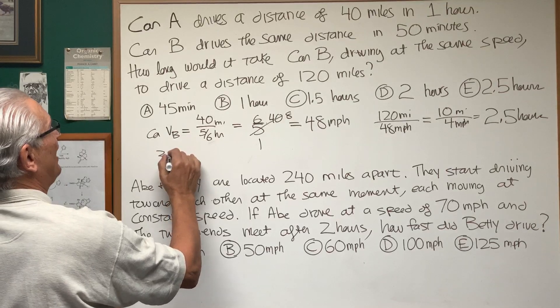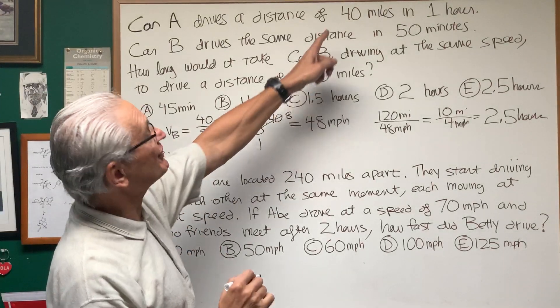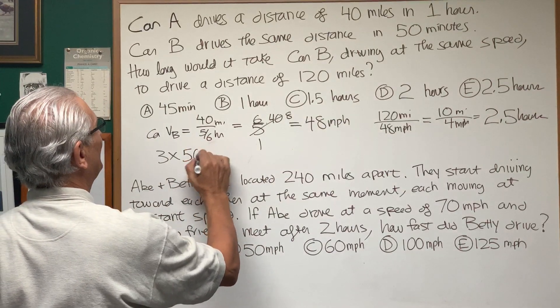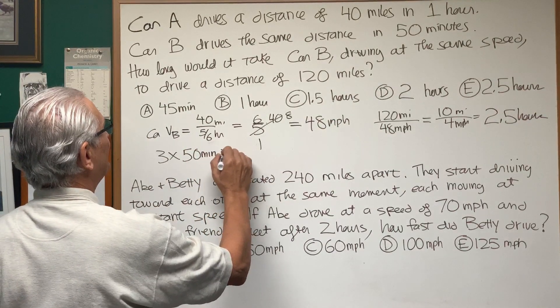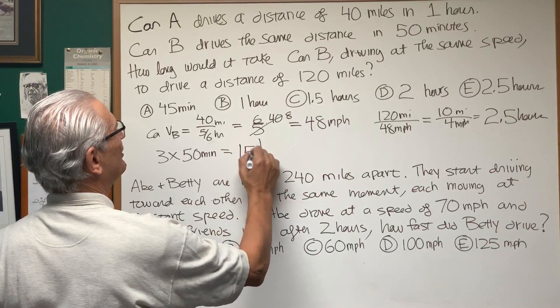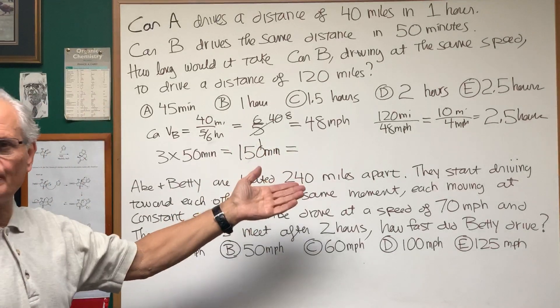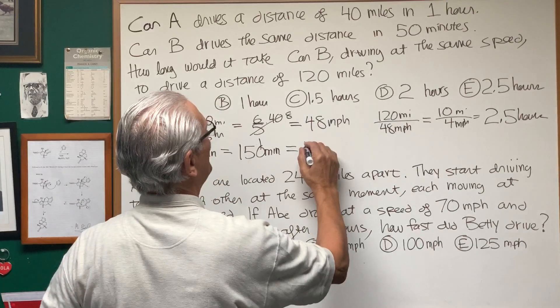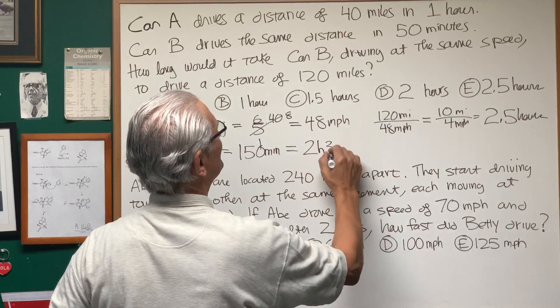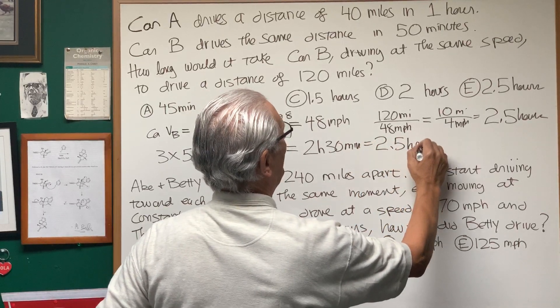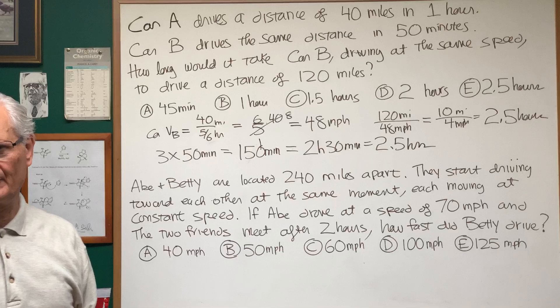So the simple way to do this is to say, yes, since 120 is 3 times 40, we're just going to multiply 50 minutes by 3, and get 3 times 50 is 150 minutes, and we subtract 120 from that, and this comes out to be 2 hours and 30 minutes, which is then equal to 2.5 hours. And so that's the easy way to do this.